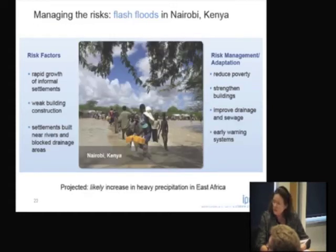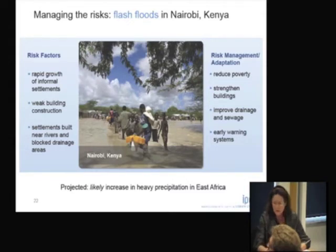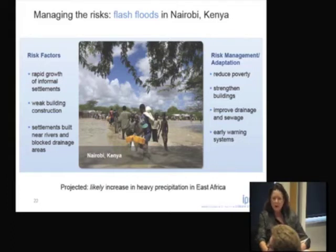Moving on to flooding, which Claire has recommended will be more likely to occur, this example from Nairobi is of particular interest. The risk factors here in Nairobi include the rapid growth of informal settlements, which makes it so much harder to have more resilient buildings in safer places. There is also real concern about drainage and waste. Again, early warning is key.